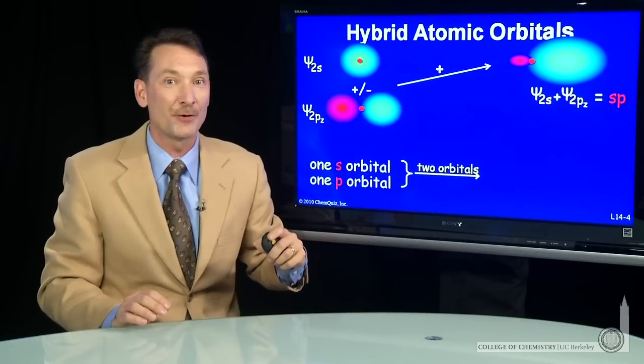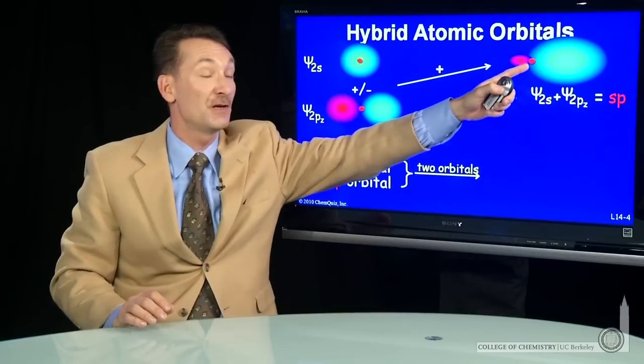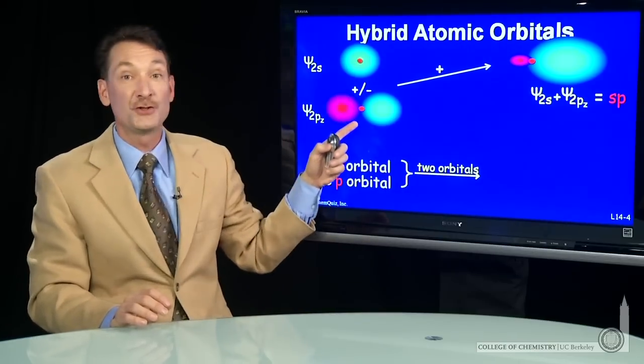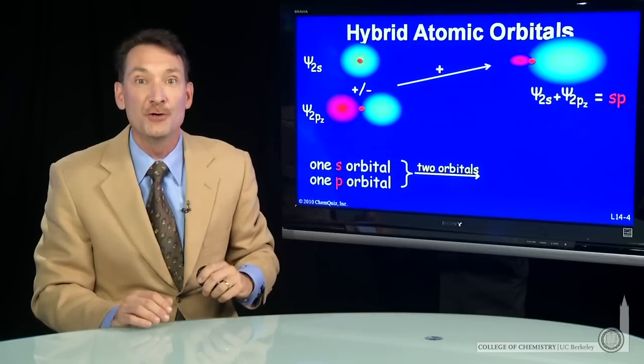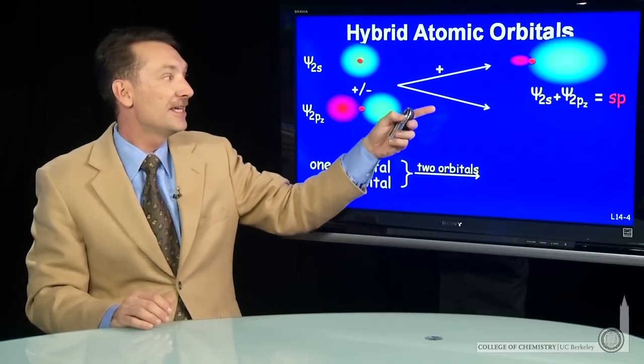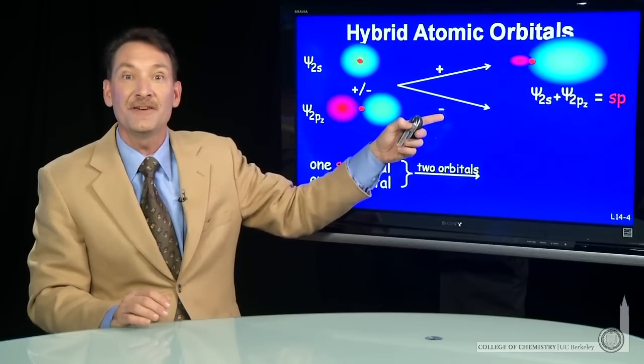So that SP atomic orbital is going to have a pair. That's only one. I started with two atomic orbitals; I need to create two new ones. So I can take the opposite—I can take the difference of those two.